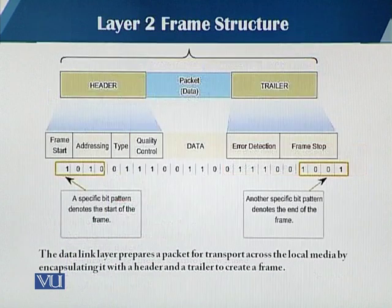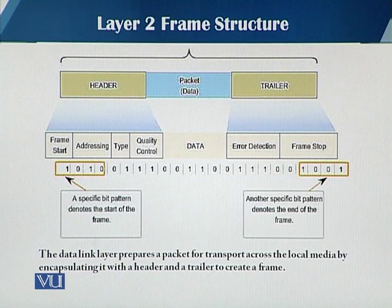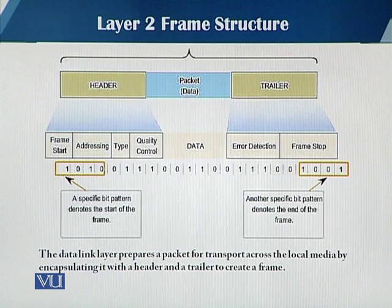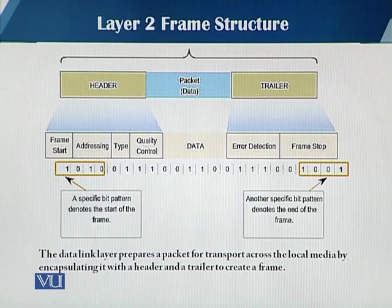Now this is a generic layer two frame structure. We are not talking about any particular link layer protocol right now — MAC is a link layer protocol, Ethernet is a link layer protocol — we are just looking at a generic layer two frame structure.